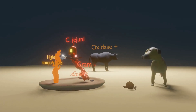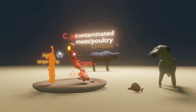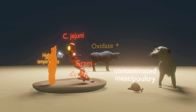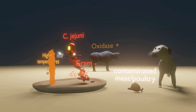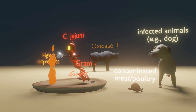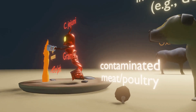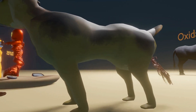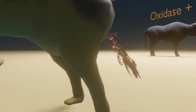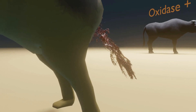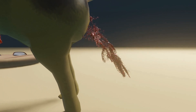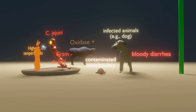Transmission of Campylobacter jejuni is through fecal-oral transmission, particularly through contaminated food, especially poultry or meat. That's why we see contaminated meat on the floor that our character had been eating. The dog taking an interest in this meat reminds us that transmission is not only through undercooked poultry or meat, but also through infected animals such as dogs, cats, sheep, or chickens. When patients ingest the pathogen, it leads to diarrhea with positive fecal leukocytes and occult blood, consistent with inflammatory diarrhea — that's why the dog has this inflammatory bloody diarrhea.